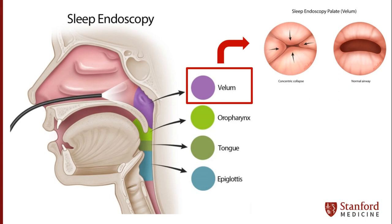The procedure begins with sedation in a supine position to mimic sleep. The surgeon then places a scope into the nose, identifying the side with the least obstruction to minimize discomfort. The scope is then passed through the nose above the inferior turbinate and passed posteriorly until the nasopharynx is reached.